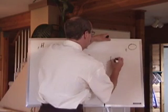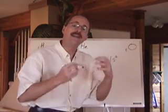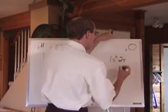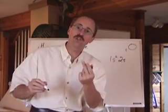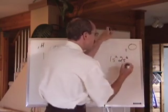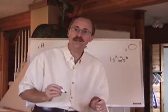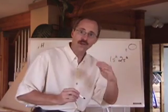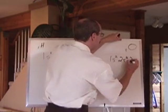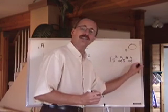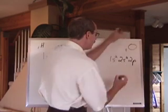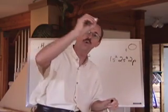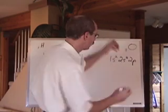Oxygen starts with 1s2, filling that s orbital, and then we move to the next. When we go to n equals 2, l still equals zero, which is an s, so we get 2s. The maximum electrons there is 2, giving us 1s2, 2s2. Then we go from l=0 to l=1 in the quantum numbers — that covers electrons 5 through 8. So we go from s to p, giving us 1s2, 2s2, 2p. There are 4 electrons remaining, all going into the 2p set of quantum numbers — so it's 2p4.